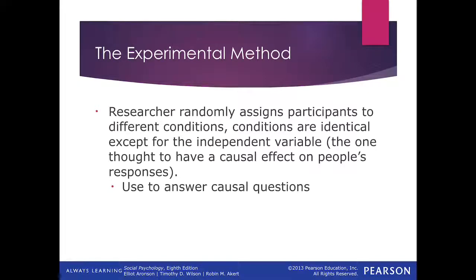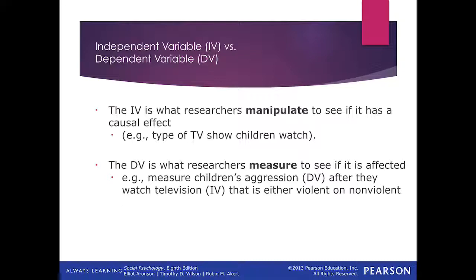We're going to go over a few key terms for the experimental method. The independent variable is independent of everything — it's what we manipulate, what we change, and what we're interested in examining. The dependent variable is what's measured — the behavior measured to see if it's impacted by the independent variable. It's dependent upon the change; it's dependent upon the independent variable.